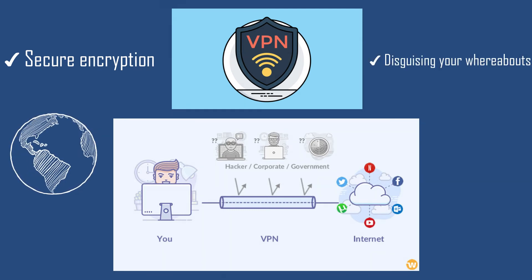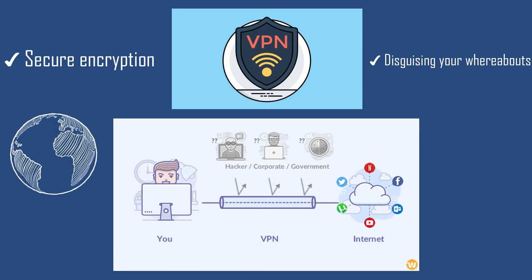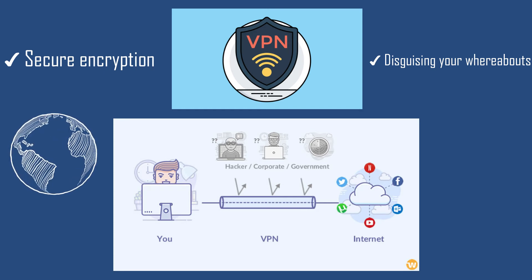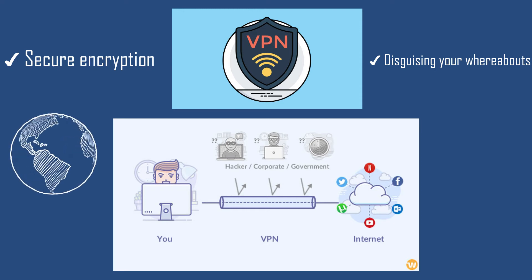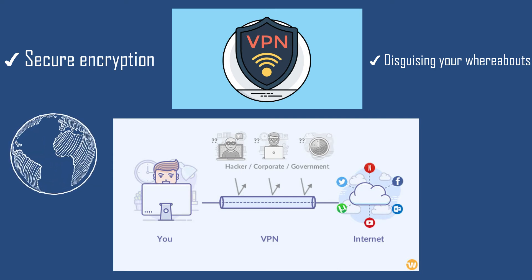The second thing is disguising your whereabouts. When you choose a region from a VPN — like in various softwares you'll see a lot of countries you can connect to — this gives you disguise. Other people will see you in, for example, Germany or Canada or America, instead of your real location like Morocco.